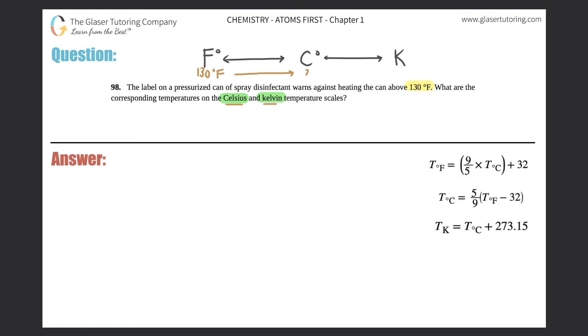We're at 130°F and they want both Celsius and Kelvin. So I have to go to Celsius first and find that answer, then use that answer to get to Kelvin. The first thing I need to do is find out what 130°F is in Celsius.